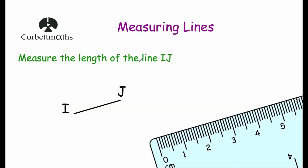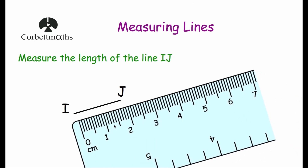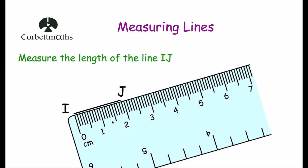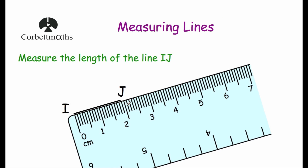Our next question asks us to measure the length of the line IJ — another diagonal line. We get our ruler and line it up with our line, making sure the zero is at the beginning. The line is longer than one centimetre but doesn't quite reach two, so it's going to be one point something. Counting along: one point one, one point two, one point three, one point four, one point five — past the middle — one point six, one point seven, one point eight, one point nine. So it's one point nine centimetres long.